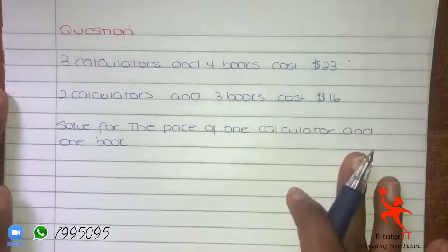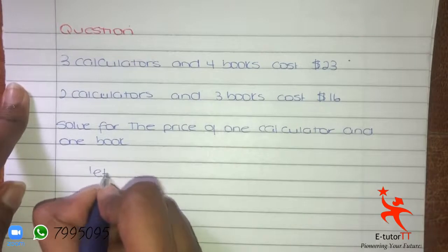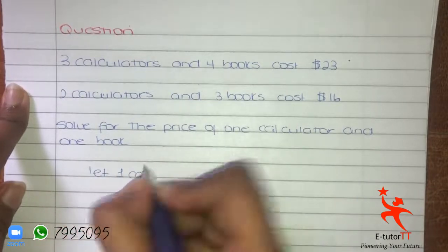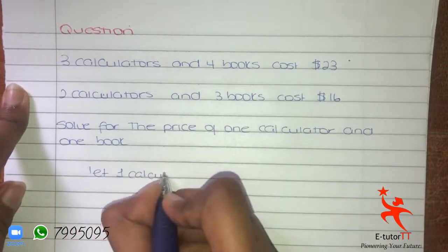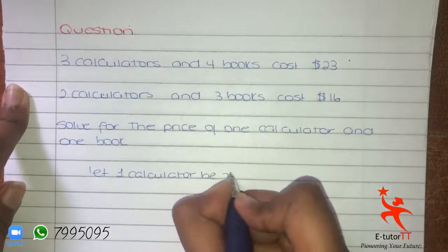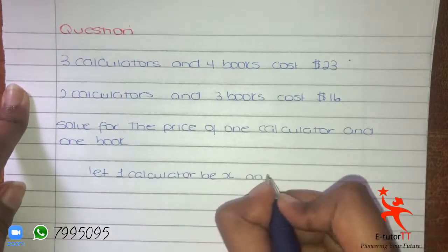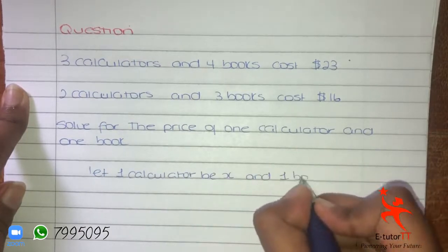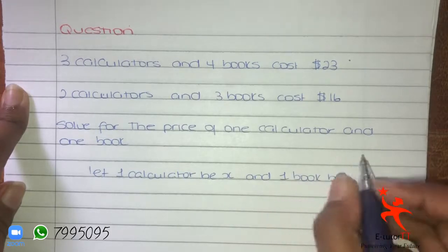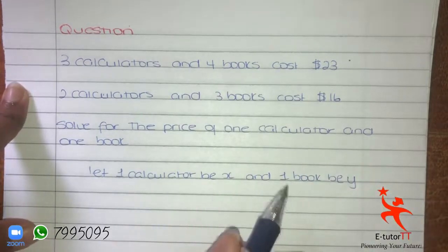So we could say: let 1 calculator be X, and 1 book be Y.